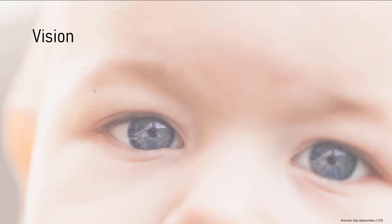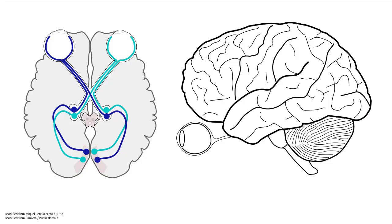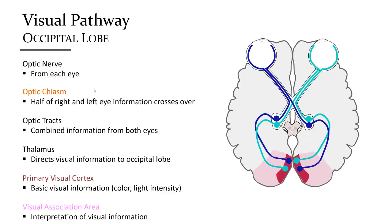Vision is one of our special senses. The portion of the cerebrum that processes visual information is the occipital lobe. The primary visual cortex receives information from both eyes on both hemispheres about light intensity, color, and depth to create a visual image. Surrounding it is the visual association area, where interpretation of what is being seen is processed. The visual pathway begins at the optic nerve from each eye's retina. On the undersurface of the brain is the optic chiasm, where half of the visual field from each eye splits to go to the opposite side of the brain.